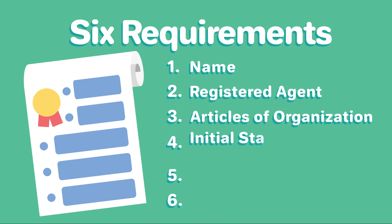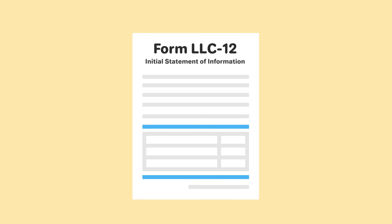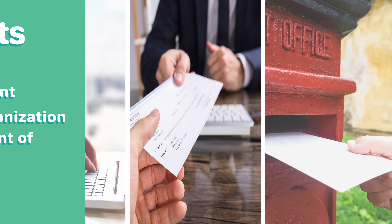Step four: File the initial statement of information. California requires all LLCs to file an initial statement of information, form LLC-12, with the California Secretary of State within 90 days of forming your LLC. This can be done online, in person, or by mail.